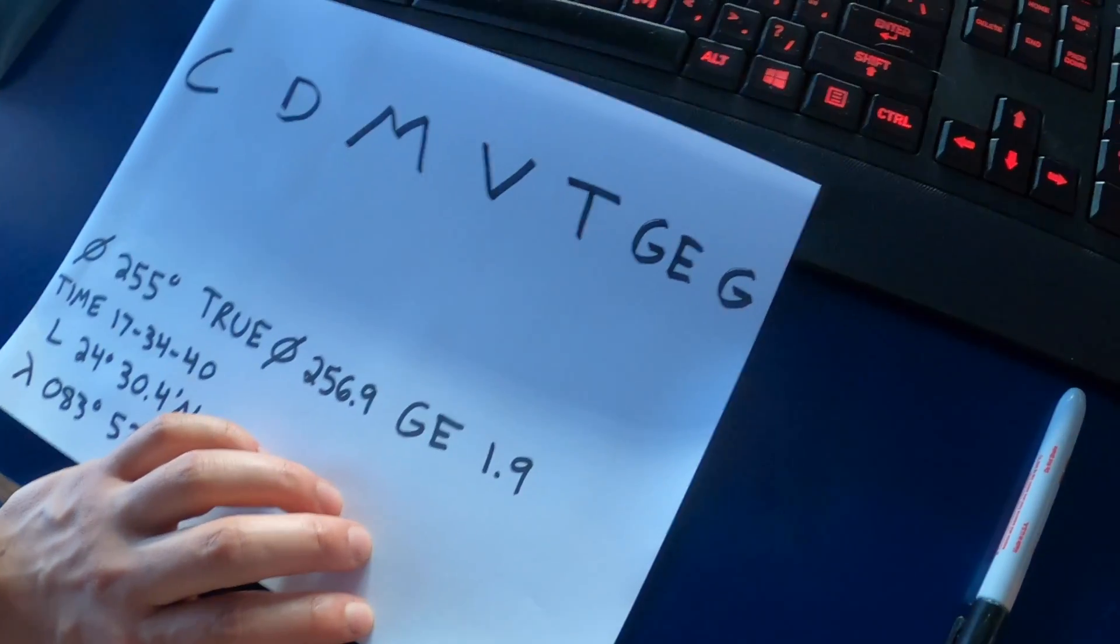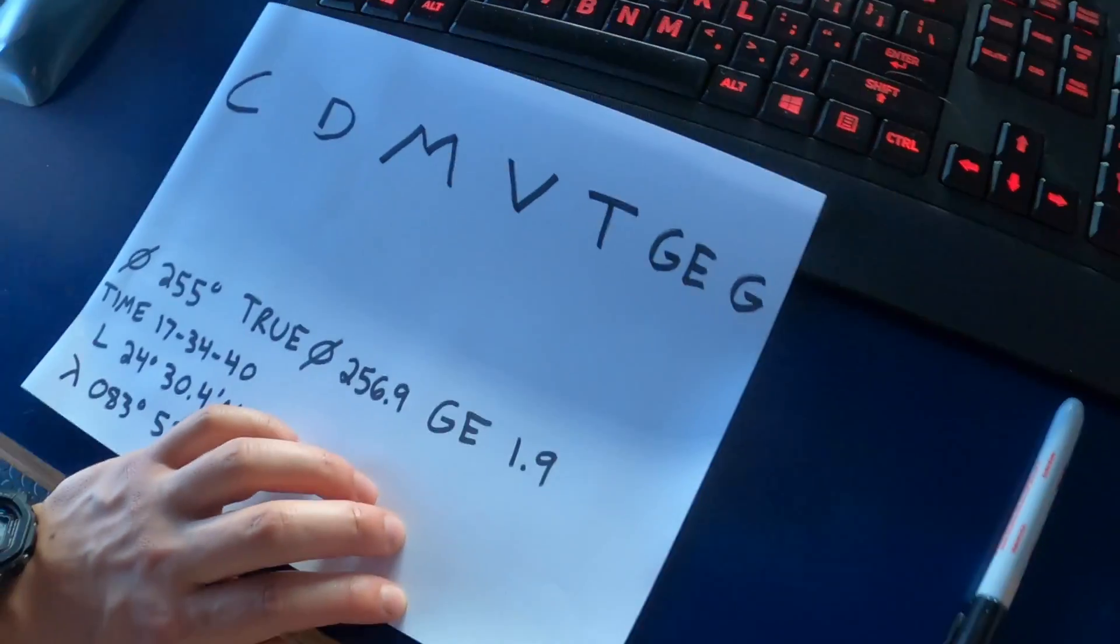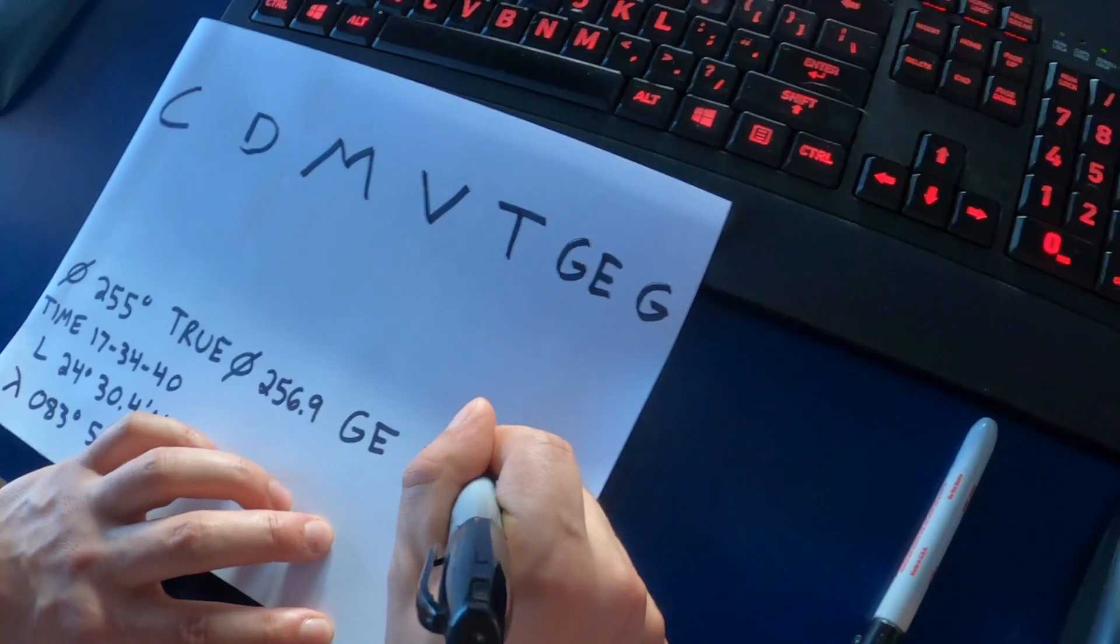And since our bearing was less than the true bearing, that means the error's to the east. So it's 1.9 degrees east.